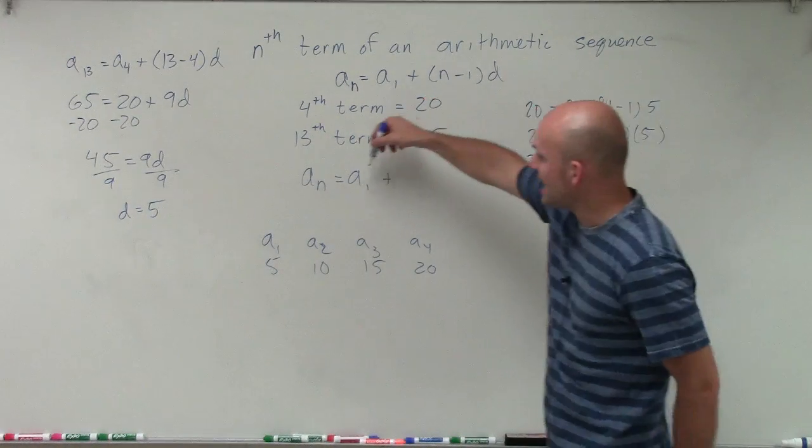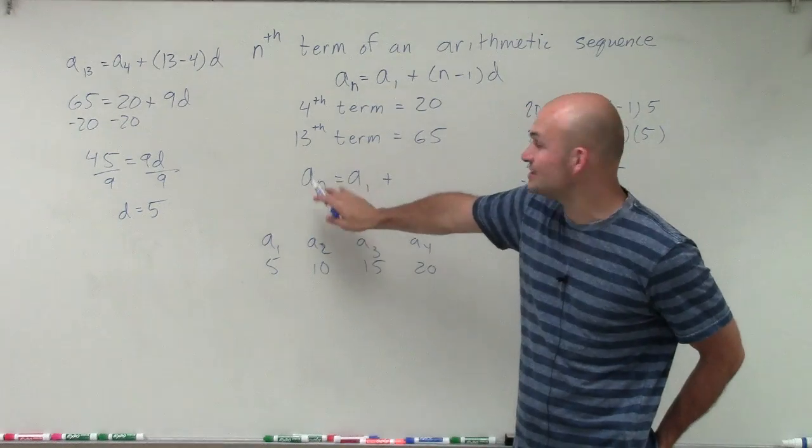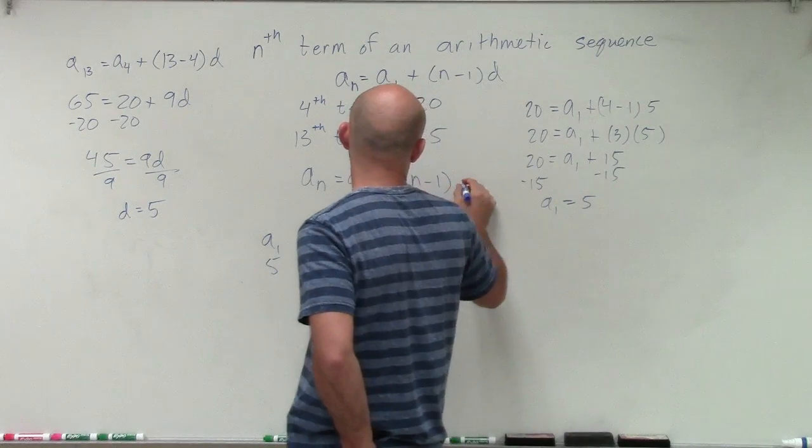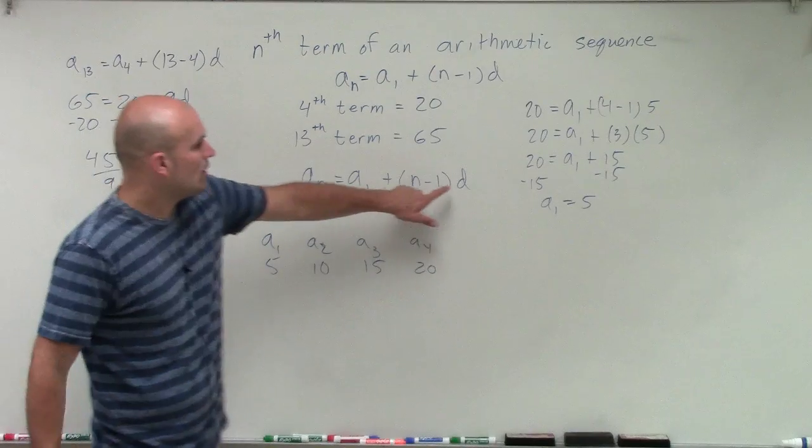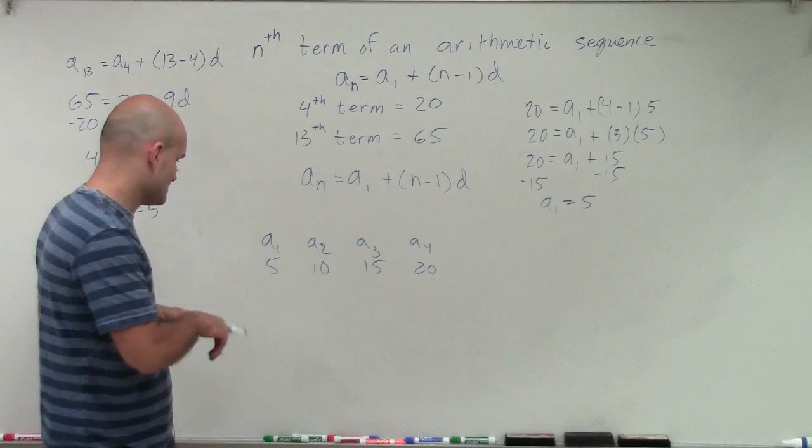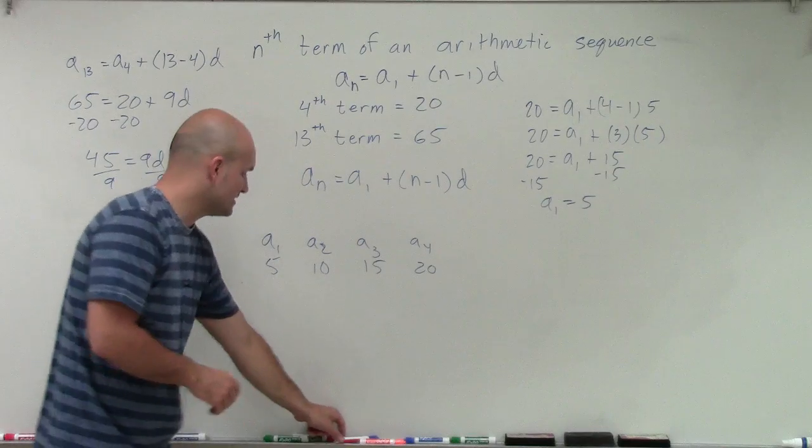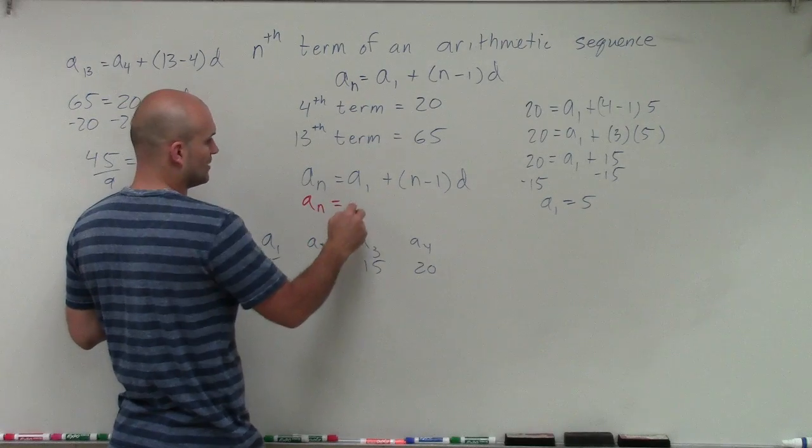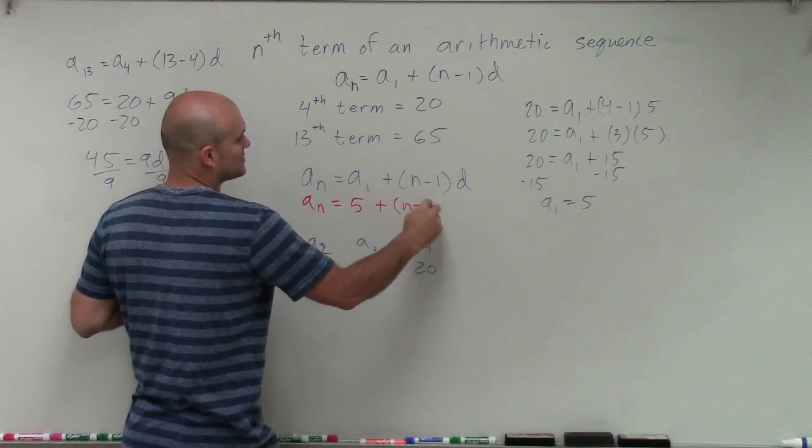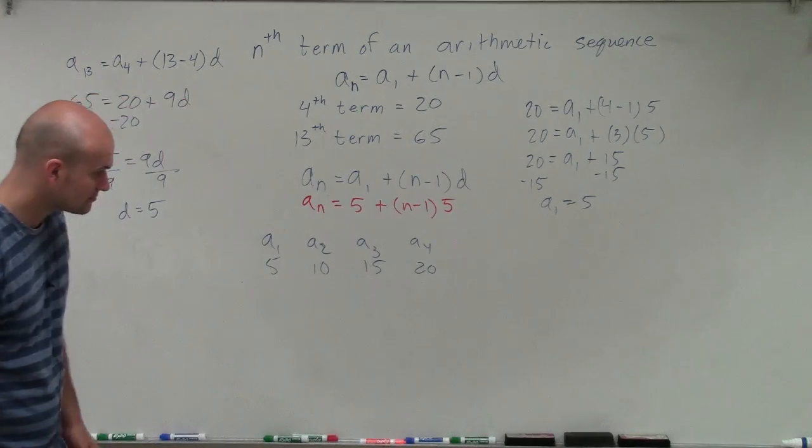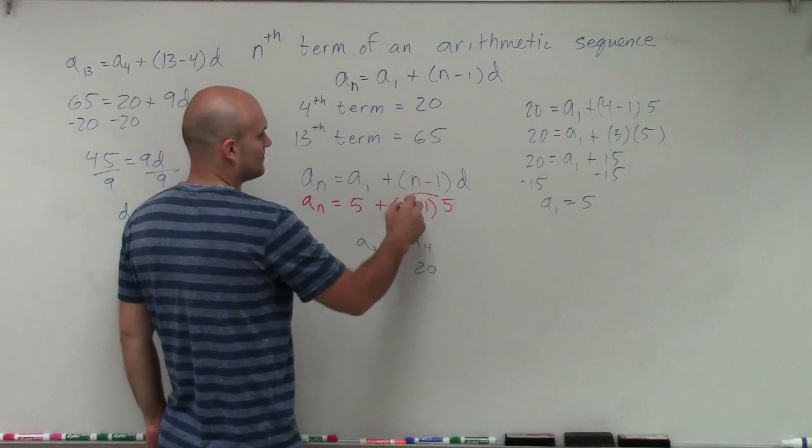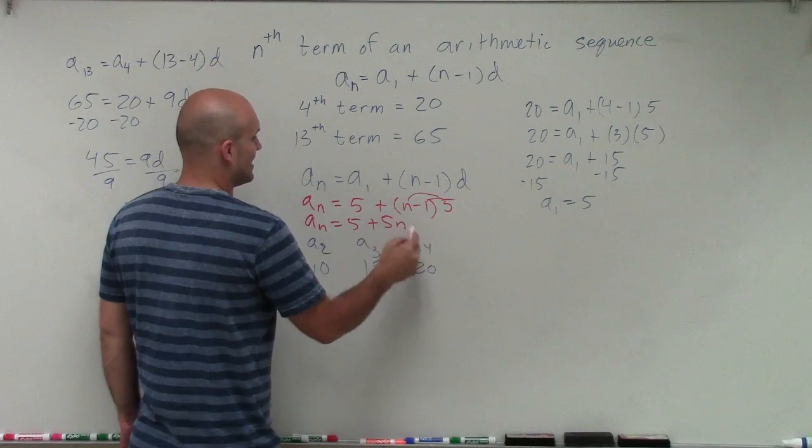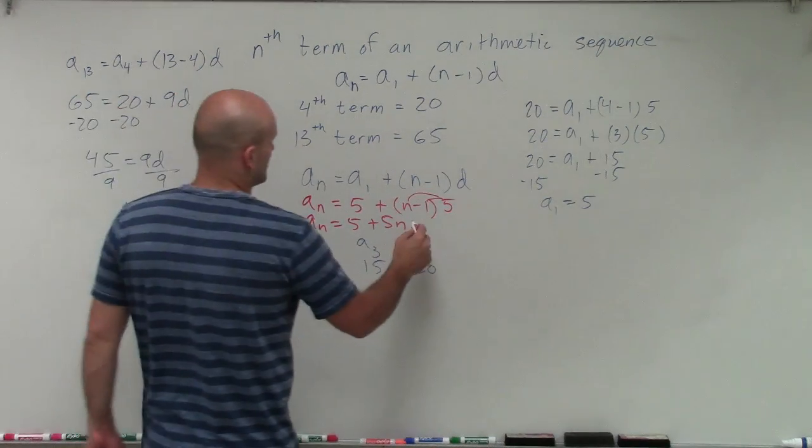But the main important thing is now we know what a sub 1 is, and we want to find the equation for any value of a sub n. So it's going to be plus n minus 1, and then now our difference is d. Well, now we know what d is and we know what a sub 1 is. So our equation to determine this arithmetic sequence is going to be a sub n equals a sub 1, which is 5, plus n minus 1 times 5. Then I can apply my distributive property, and I'd have a sub n equals 5 plus 5n minus 5.